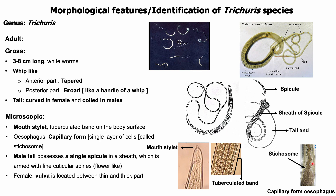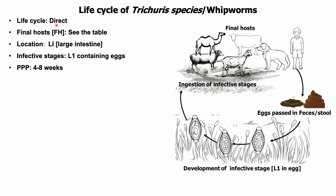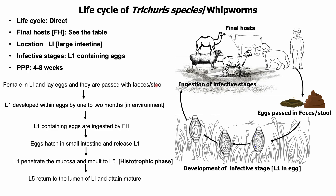The male tail possesses a single spicule in a sheath which is armed with fine cuticular spines. In female worms, the vulva is located at the wider part of the body. The life cycle of Trichuris species is direct, as there is no involvement of an intermediate host. Final hosts are the different animals already mentioned, and the parasite is located in the large intestine.